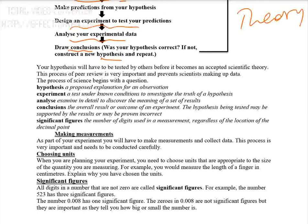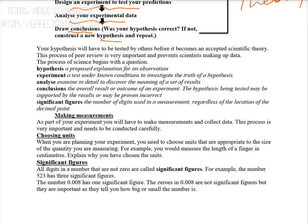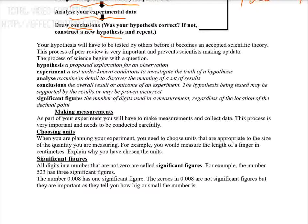A hypothesis is a proposed explanation of an observation. Analysis means examining in detail and arranging the data. We have seen all of this.